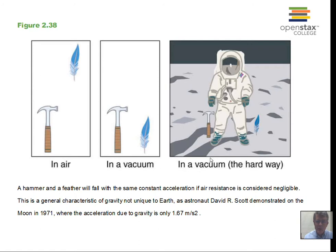In 1971, several astronauts walked on the Moon. An astronaut did the so-called Galileo's experiment on the Moon, dropping a hammer and a feather. A feather was taken to the Moon, and the geology hammer was useful for gathering rocks.